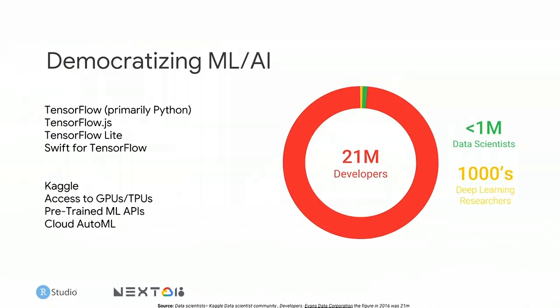Why is this so important? You'll hear the theme around democratizing ML and AI across today's sessions. There are only a few million data scientists and ML practitioners in the world today — there's definitely a skill shortage. But when we talk about developers, business analysts, data analysts, and statisticians, we can expand that number to the tens of millions. During Fei-Fei's keynote yesterday, you saw Cloud AutoML, a way to build natural language, vision, and translation machine learning models without coding.